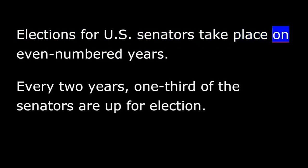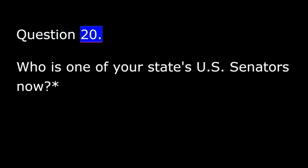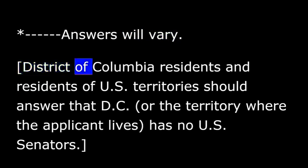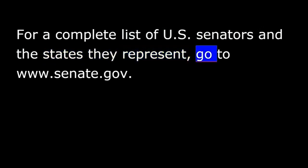The Constitution puts no limit on the number of terms a Senator may serve. Elections for U.S. Senators take place on even-numbered years. Every two years, one-third of the Senators are up for election. Question 20. Who is one of your state's U.S. Senators now? Answers will vary. District of Columbia residents and residents of U.S. territories should answer that D.C. or the territory where the applicant lives has no U.S. Senators. For a complete list of U.S. Senators and the states they represent, go to www.senate.gov.